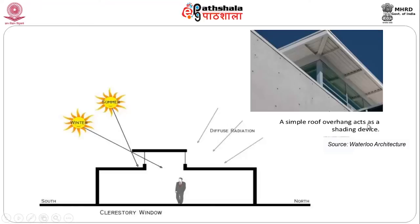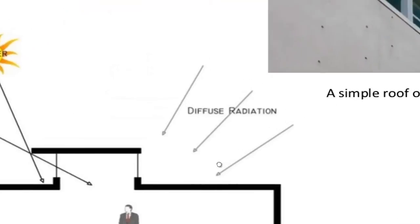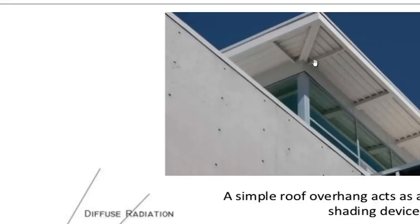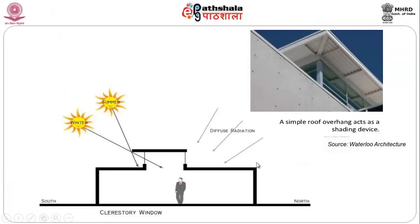With clerestory windows and a simple roof overhang acting as a shading device, direct usage or exposure to the user is very minimal — it is diffused radiation, not direct radiation. In a south-north orientation where the clerestory window is placed at the top, hot air will rise and exit. Even if permanently closed, the shading device ensures direct sunlight does not enter, and the light that comes through will be diffused. We can thus control heat gain by a simple shading device and window placement.